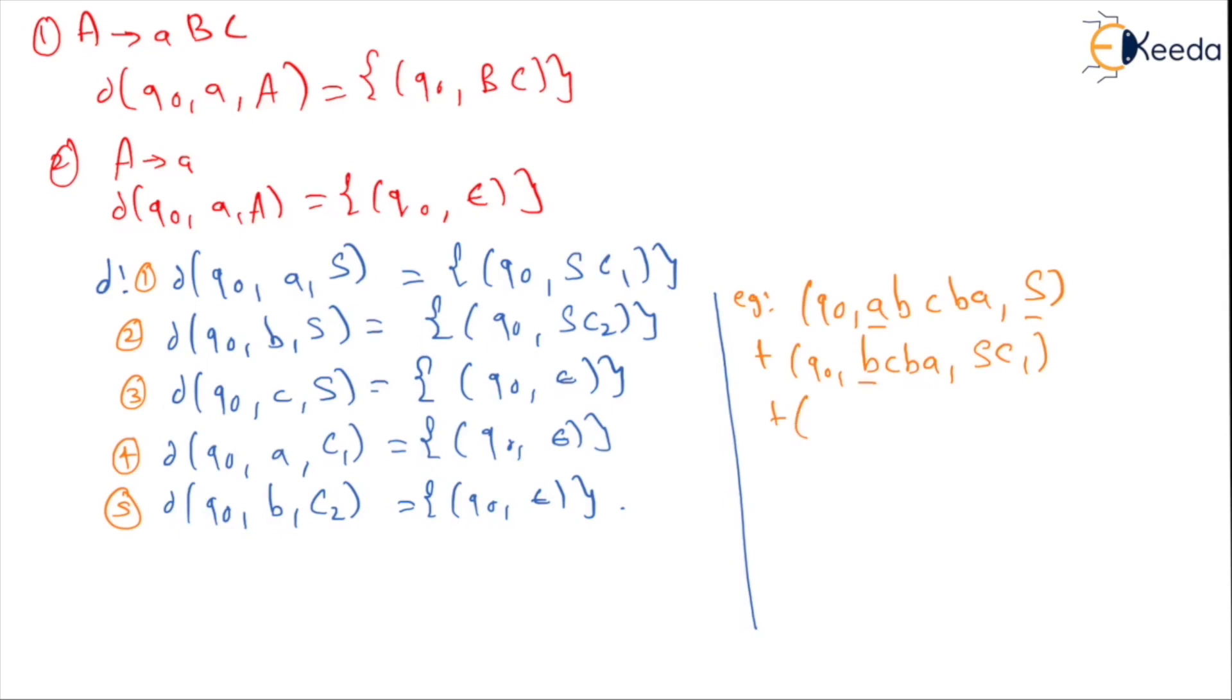Further, q0 on b when the stack top is S. Q0 on b when the stack top is S, using rule two I say go to q0. B a remains over here, and since I pop out the S, I have C2 and C1 on the stack top.